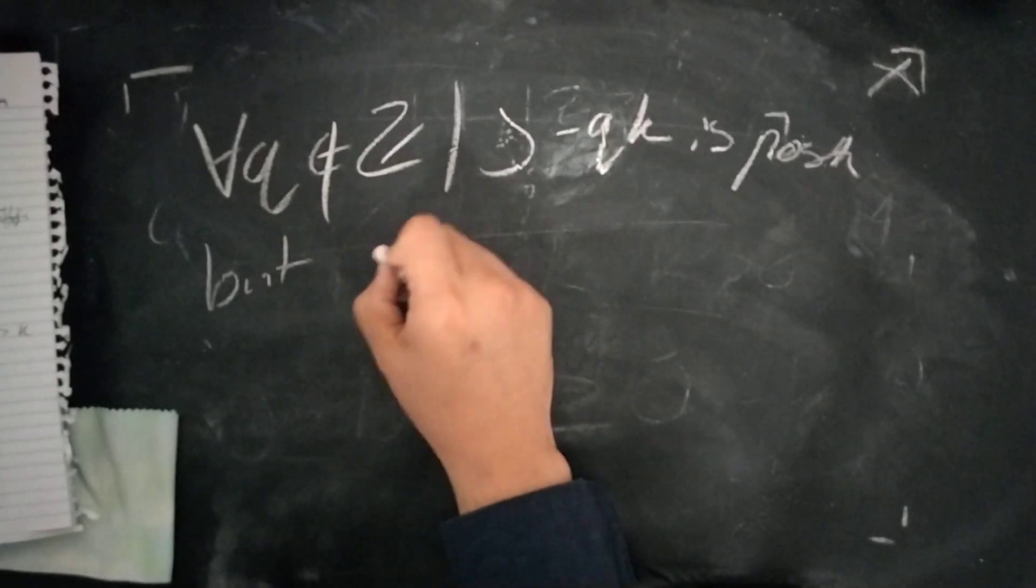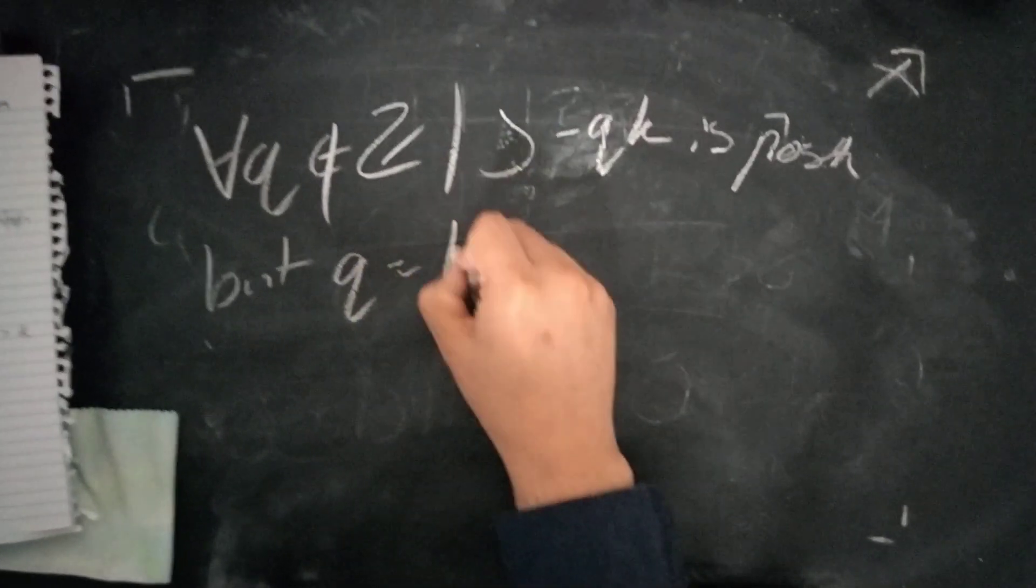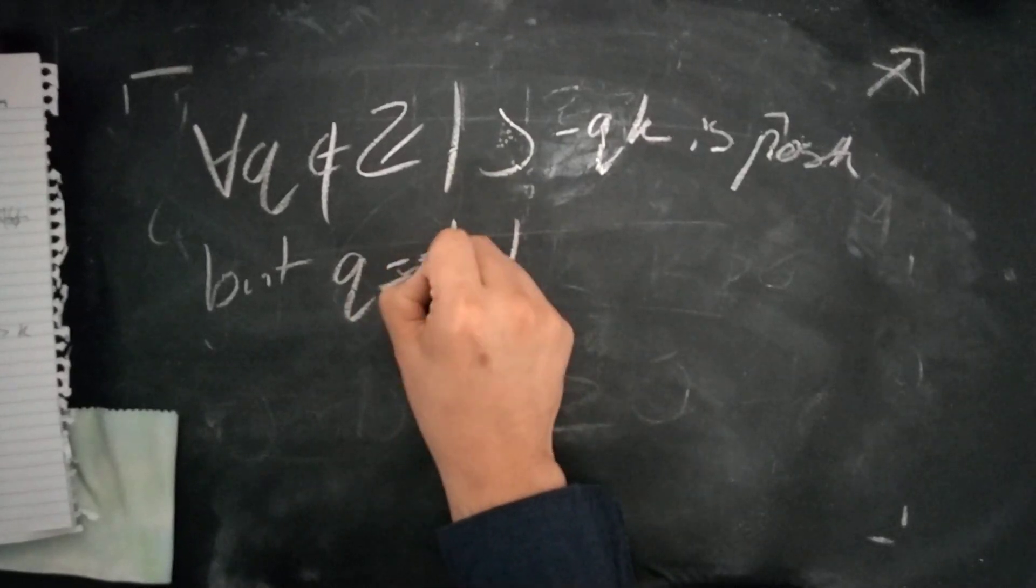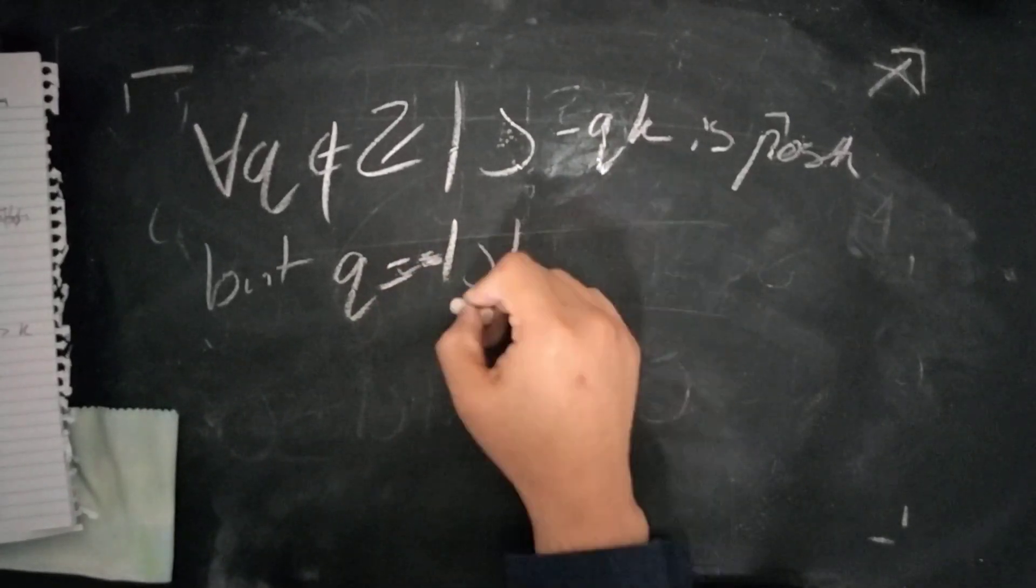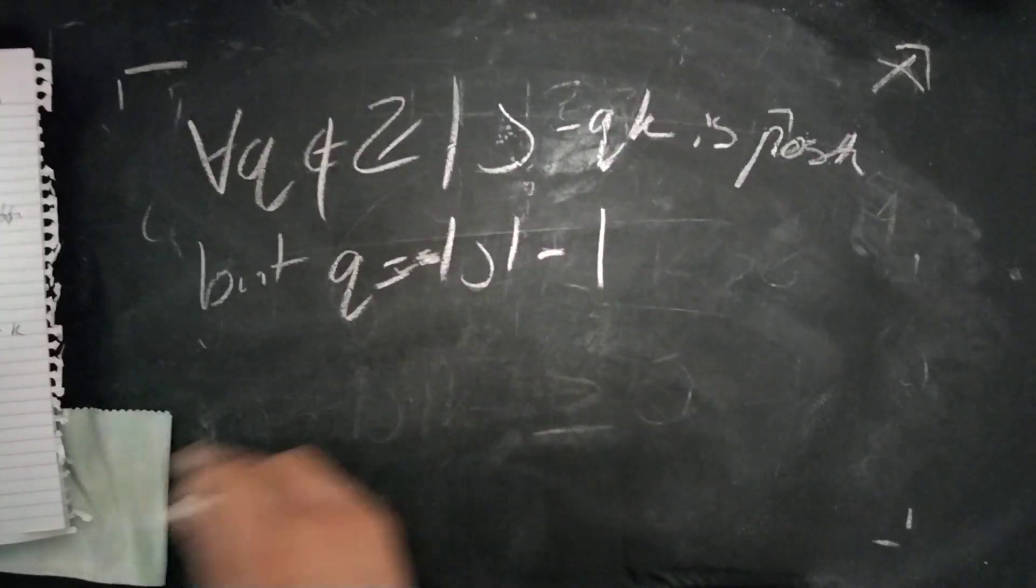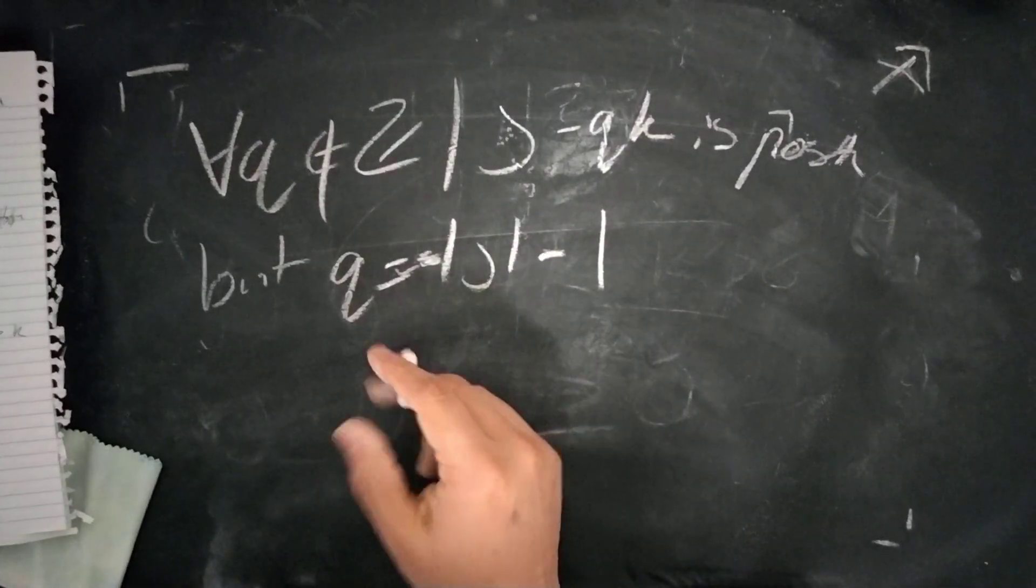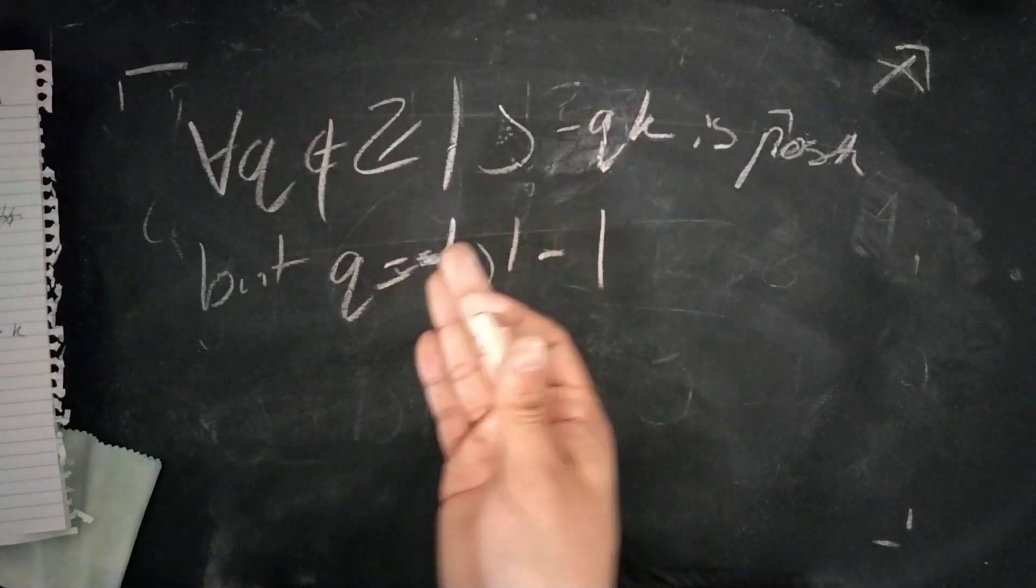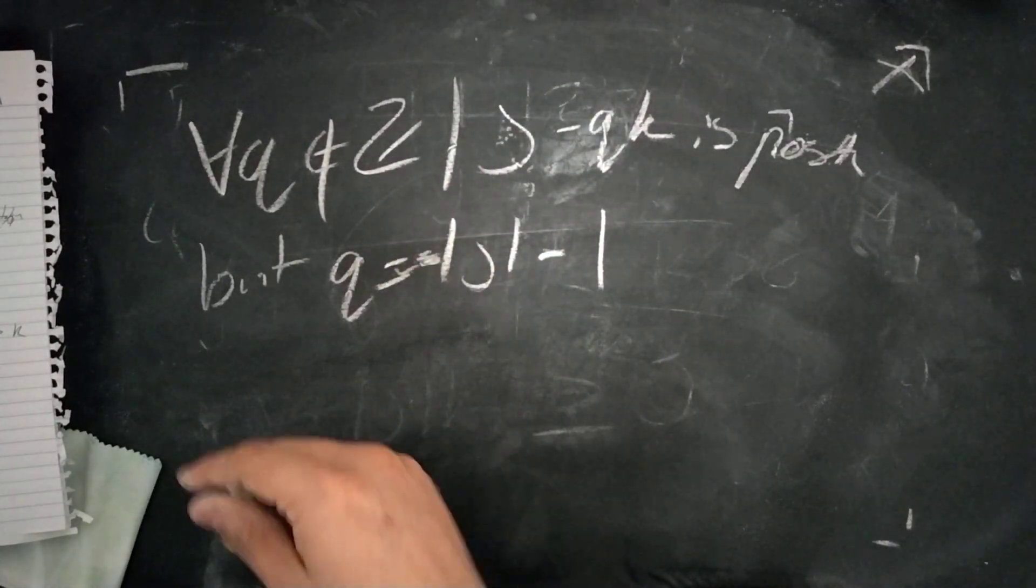But, we, of course, that Q is equal to this negative, of course, negative J, negative absolute value of J minus one. The contradiction has been reached. The contradiction is false. Its contradiction is true.